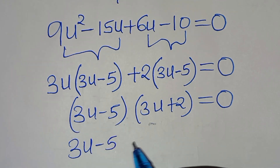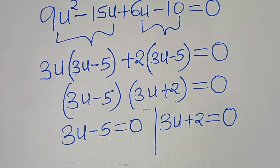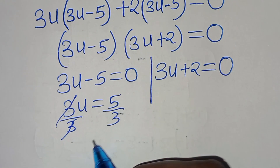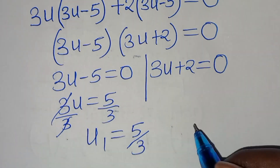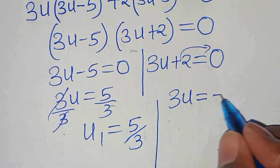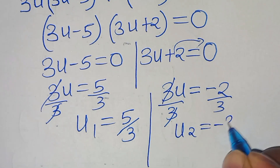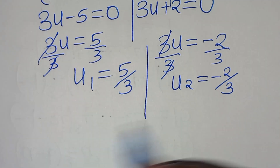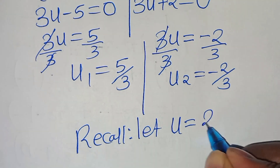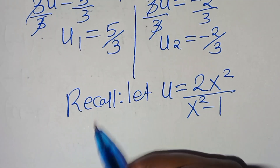From the first factor: 3u - 5 = 0, so 3u = 5, dividing both sides by 3 gives u₁ = 5/3. From the second factor: 3u + 2 = 0, so 3u = -2, dividing both sides by 3 gives u₂ = -2/3. Recall we let u = 2x²/(x²-1).